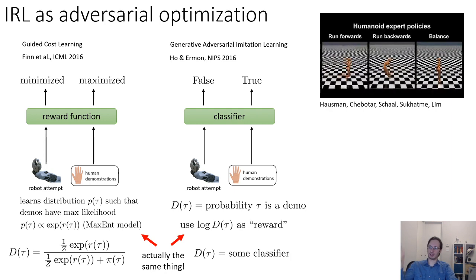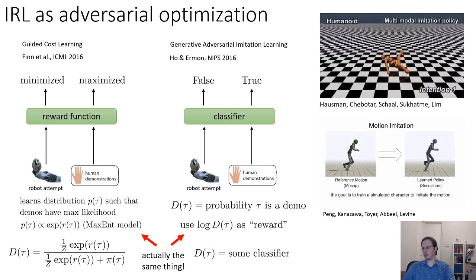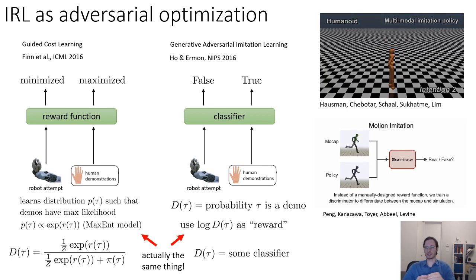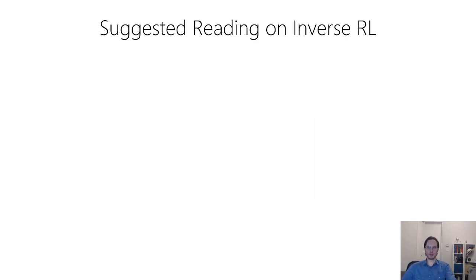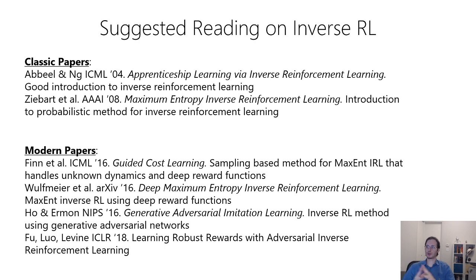These things have been used in a number of different settings — for example, combining it with a clustering approach to recover multiple different behavior clusters from heterogeneous demonstrations, or performing inverse reinforcement learning or imitation from images to copy simulated locomotion gaits. For suggested readings on inverse reinforcement learning, classic papers include 'Apprenticeship Learning via Inverse Reinforcement Learning' and 'Maximum Entropy Inverse Reinforcement Learning.' More modern papers include 'Guided Cost Learning,' which proposes a method to scale up max-entropy IRL to the high-dimensional deep learning setting, 'Deep Maximum Entropy Inverse RL' for tabular domains with deep networks, 'Generative Adversarial Imitation Learning' which recovers the policy, and 'Learning Robust Rewards with Adversarial Inverse Reinforcement Learning' which instantiates the GAN method and studies transfer.